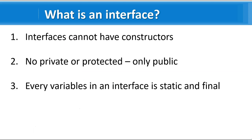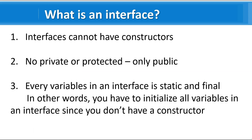Every variable in an interface is static and final. The reason it must be initialized directly is that an interface has no constructor. Since it is static, the only way to assign a value is by direct initialization — given that you don't have a constructor, that's the reason for this restriction. These are some of the key points about interfaces. Now, one of the key features of having an interface in Java is that it supports multiple inheritance.